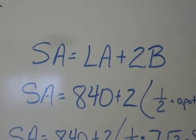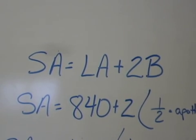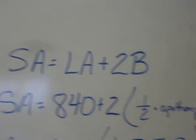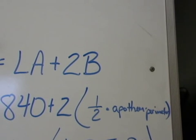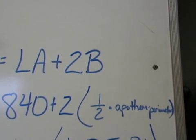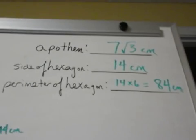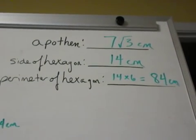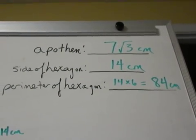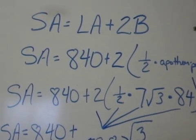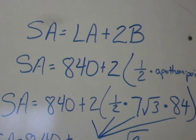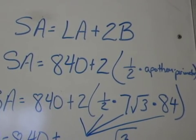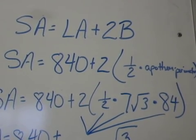So let's plug in what we know. The lateral area again was 840, so I'll plug that in. And remember, big B, 1 half times apothem times perimeter. We figured out up there that the apothem was 7 radical 3 centimeters, and the perimeter was 84 centimeters. Plugging that in, I now know that my surface area is 840 plus 2 times the quantity 1 half times 7 radical 3 times 84.